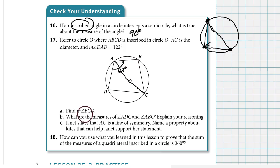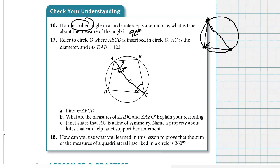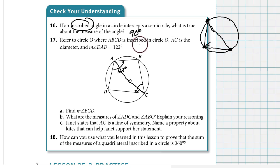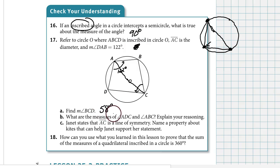Find the measure of angle BCD. Angle BCD is over here. Angles DAB and BCD are opposite angles in an inscribed quadrilateral. They are supplementary — they add to 180 degrees. So angle BCD is 58 degrees.